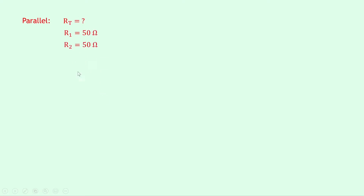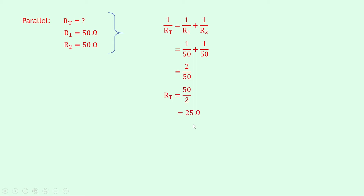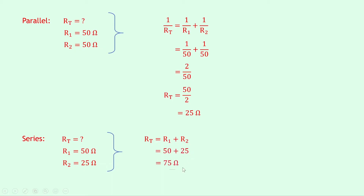For our parallel combination first, we can write down what we know from the question. We're trying to find RT, we know that R1 is 50 ohms and R2 is 50 ohms. So writing down our equation, we have 1 over RT equals 1 over R1 plus 1 over R2. Substituting in the numbers gives us 1 over 50 plus 1 over 50, which simplifies to 2 over 50. Then we need to flip both sides to get RT, so we get RT equals 50 over 2, which gives us 25 ohms. Now we need to take that total resistance in parallel and add it to our series resistor of 50 ohms. For series, RT is what we're trying to find, R1 is 50 ohms and R2 is 25 ohms. So RT equals R1 plus R2, and putting in the numbers gives 50 plus 25, which equals 75 ohms.